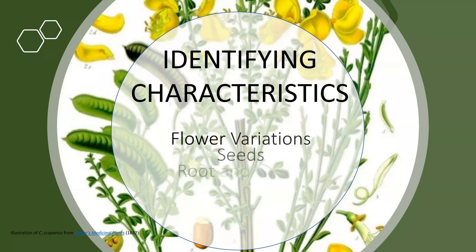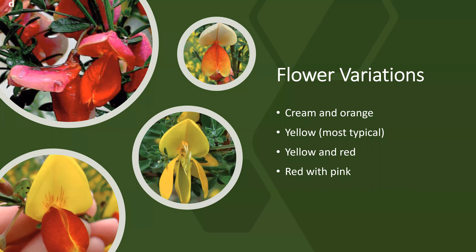The identifying characteristics of scotch broom are the flower variations, seeds, root and stems, and the life cycle. The flower variations include cream and orange, yellow which is the most typical, yellow and red, and red with pink.